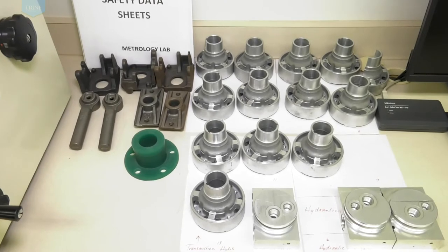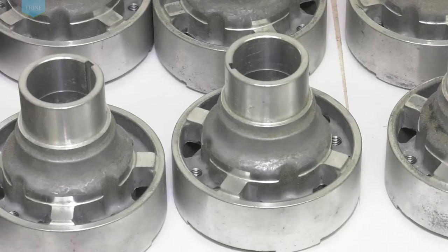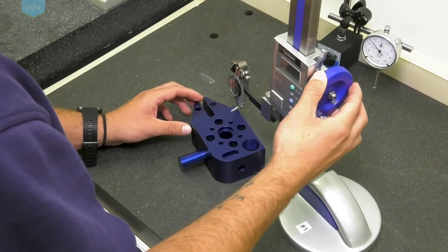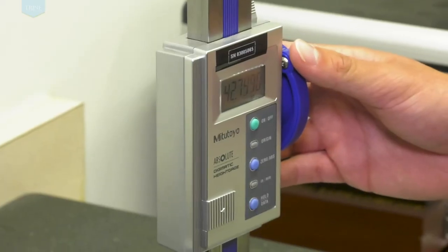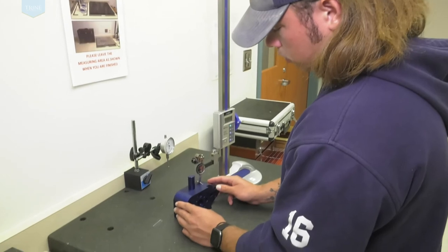An important component to this class is also a reverse engineering final project. Students will use the lab equipment to measure a finished product, then create a fully dimensioned and toleranced engineering print. This simulates common practices in industry for benchmarking and modernizing parts produced prior to our current engineering software and systems.